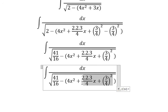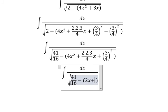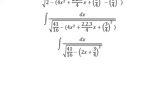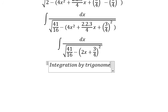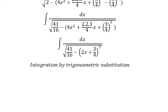We change this into 2x plus 3/4, everything squared. Now we use integration by trigonometric substitution. We set 2x plus 3/4 equals square root of 41 over 4 sine t.